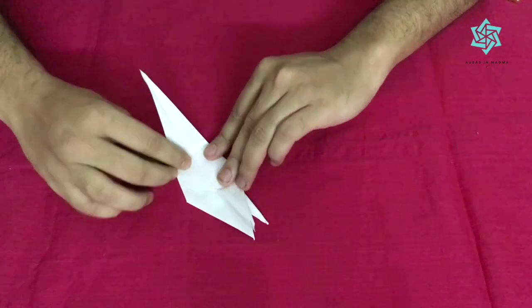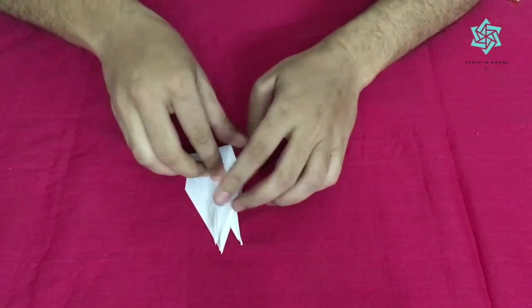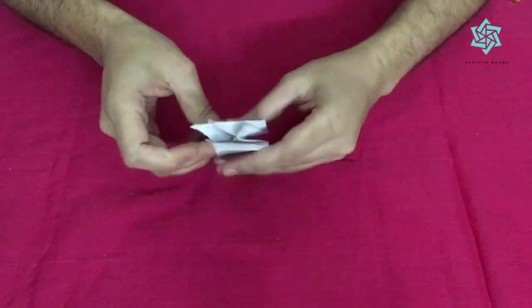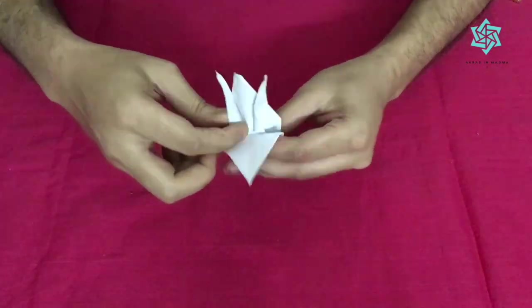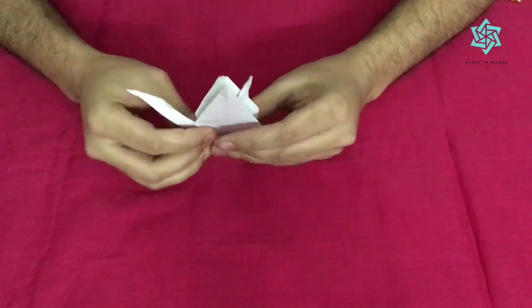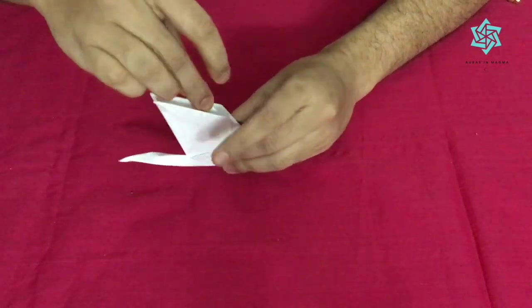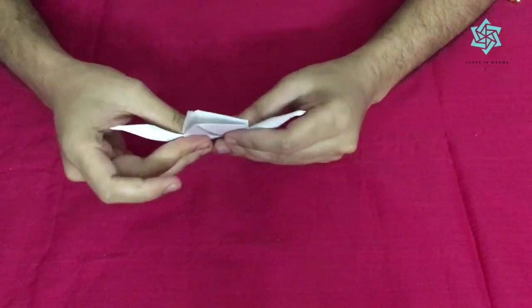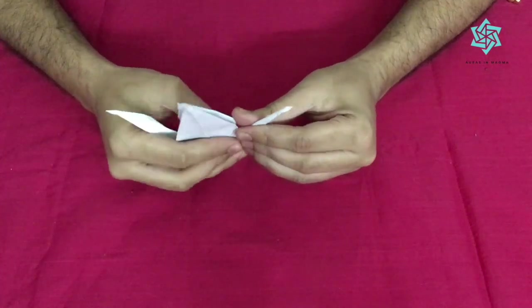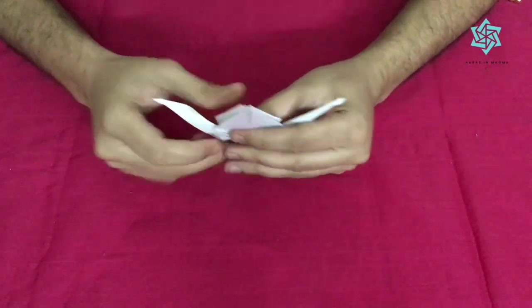Similarly this one. Either of them can be a head or a tail but they are too much inside. What we do is we push them a bit outside. This is a judgment fold, that is it depends on you how much you want the tail to be outside. It's completely a choice which you have to make.